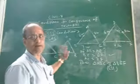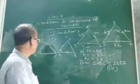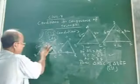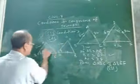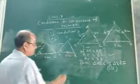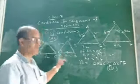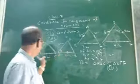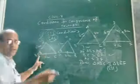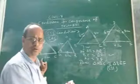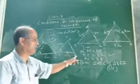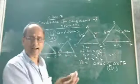Now, what does the SAS condition say? Suppose AB and PQ are one pair of corresponding sides, each 5cm. BC and QR are another pair, each 6cm. Now look at the included angle — the angle that comes between two sides. Angle B is between AB and BC, and angle Q is between PQ and QR. So angle B and angle Q are the included angles of the two triangles. Suppose both are 30 degrees.